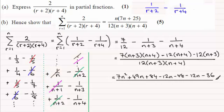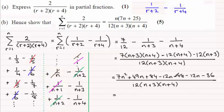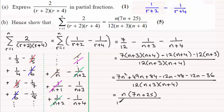You can check that against the expansion if you're having problems. When we clean this up, we get 7n squared, and we're just left with 25n — the other terms cancel out — so I can pull out n as a common factor, giving n(7n plus 25), all divided by 12(n plus 3)(n plus 4).